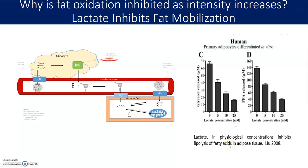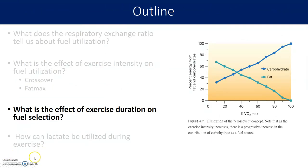This lactate inhibition of fat oxidation is illustrated in a study by Liu et al. (2008-2009), in which human adipocytes were biopsied, grown, and exposed to different levels of lactate. Panel D shows that at physiological lactate levels of five to ten, adipocytes released fewer fatty acids when stimulated — demonstrating that lactate inhibits fatty acid mobilization. That's where we'll end this part of the lecture; the rest will continue in the next video.